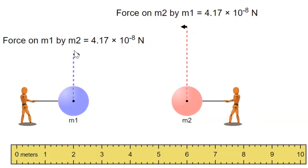That is something we expect according to Newton's third law — that two objects apply the same amount of force on each other but in opposite directions.